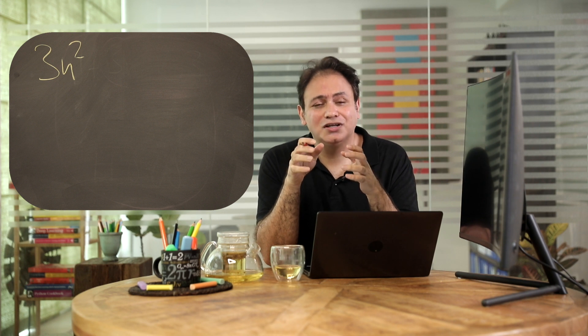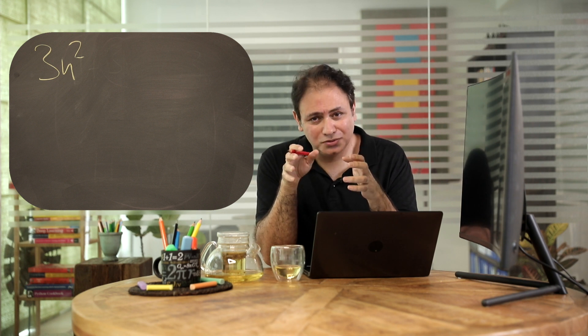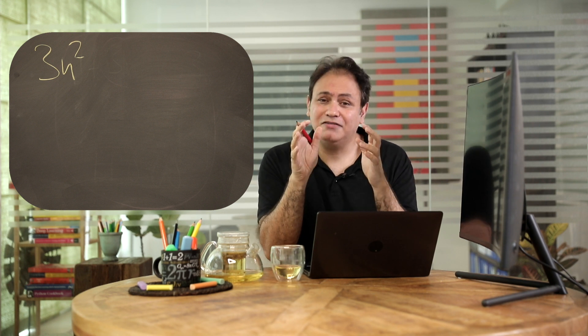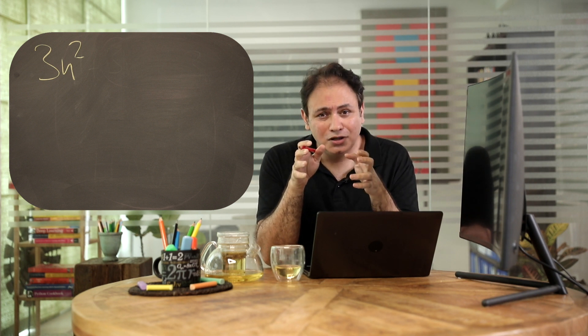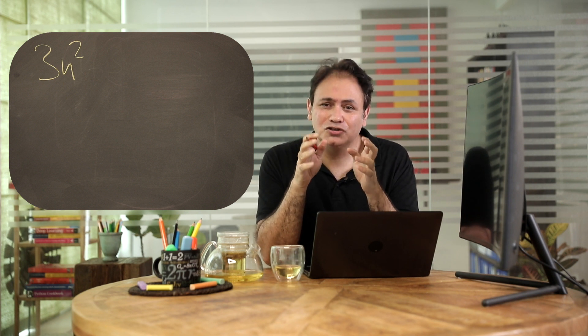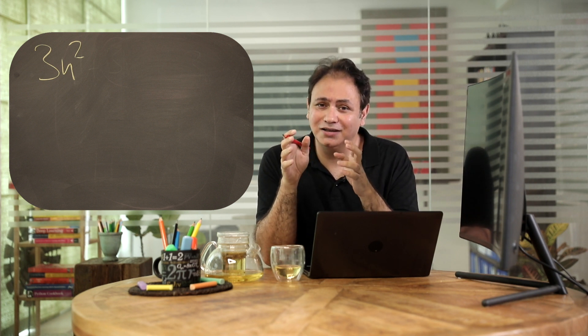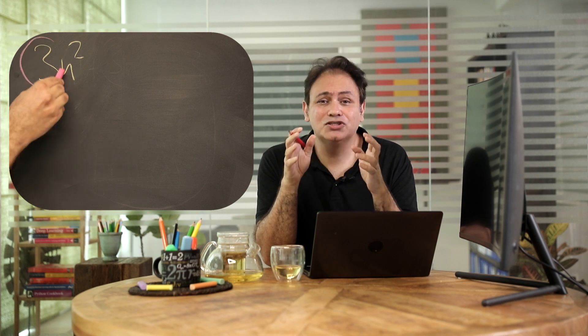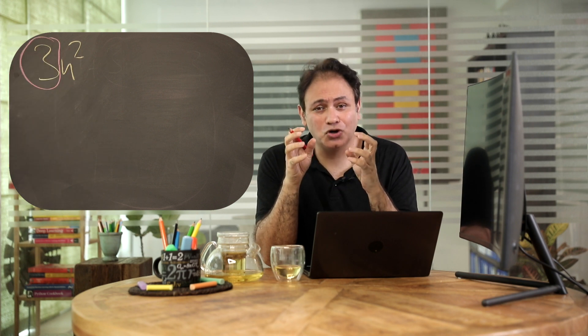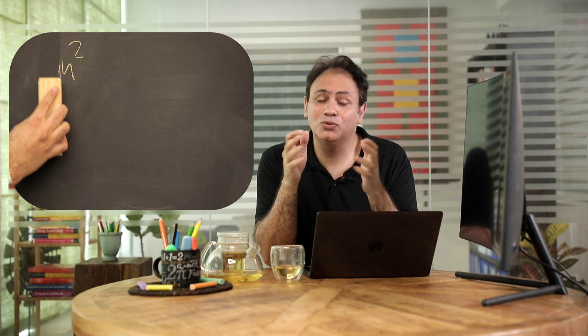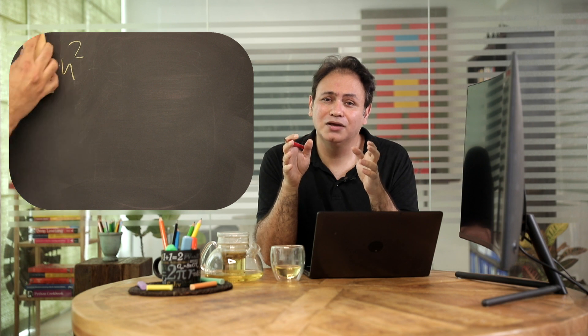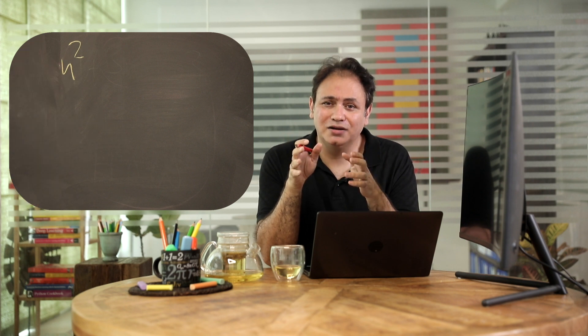Simplification number two: we are now left with 3n², so what we do is drop the coefficient of the leading term. In 3n² we drop the 3 and we are only left with n².